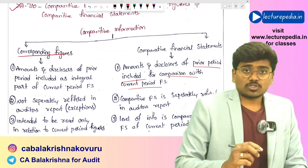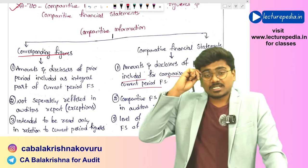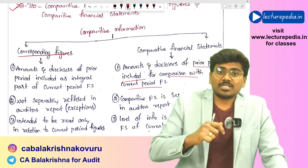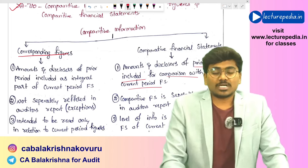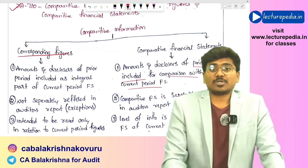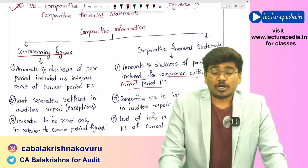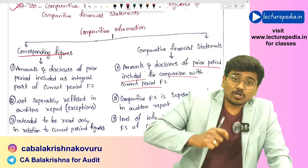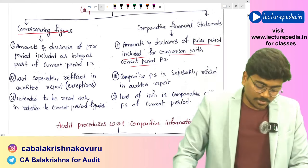In terms of reporting: when corresponding figures are presented, the auditor in his audit opinion does not separately refer to the corresponding figures; when comparative financial statements are presented, the auditor shall refer to each of the comparative financial statements. In case of corresponding figures, the auditor will not refer to them except in certain exceptional situations.